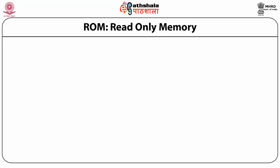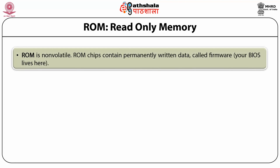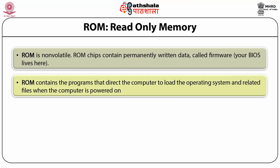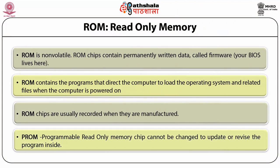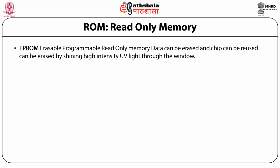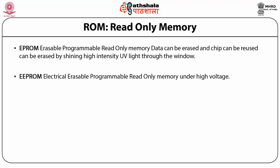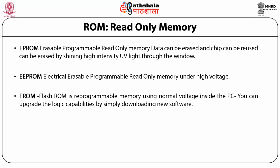ROM is non-volatile. ROM chips contain permanent written data called firmware and direct the computer to load the operating system when powered on. ROM chips are usually recorded at manufacture and cannot be changed. EPROM — Erasable Programmable Read-Only Memory — allows data to be erased by shining high-intensity ultraviolet light through a window, and chips can be reused. EEPROM — Electrically Erasable Programmable Read-Only Memory — allows memory to be erased through high voltage. Flash ROM is reprogrammable memory using normal voltage, allowing logic capabilities to be upgraded by downloading new software, saving the expense of replacing circuits and chips.